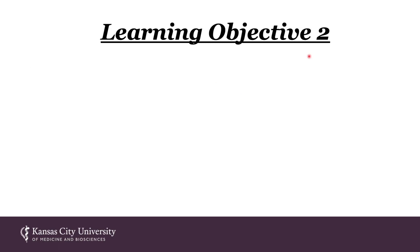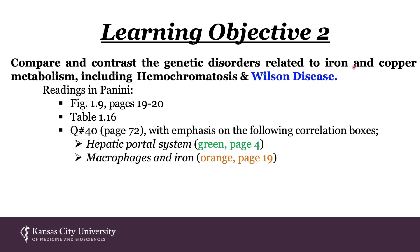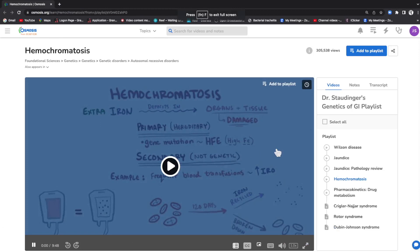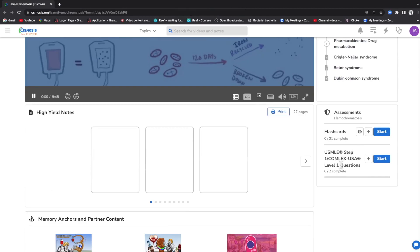Learning objective two: we're going to compare and contrast the genetic disorders related to iron and copper metabolism, including hemochromatosis and Wilson disease. Here are your readings. As a reminder, here are two supplemental videos from Osmosis describing hemochromatosis and Wilson disease for your perusal. If you click on each link, a video will be revealed to you, along with flashcards and practice questions.